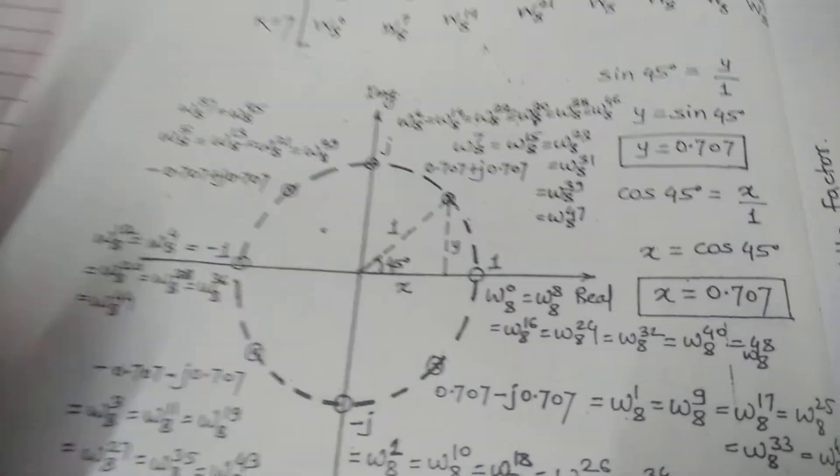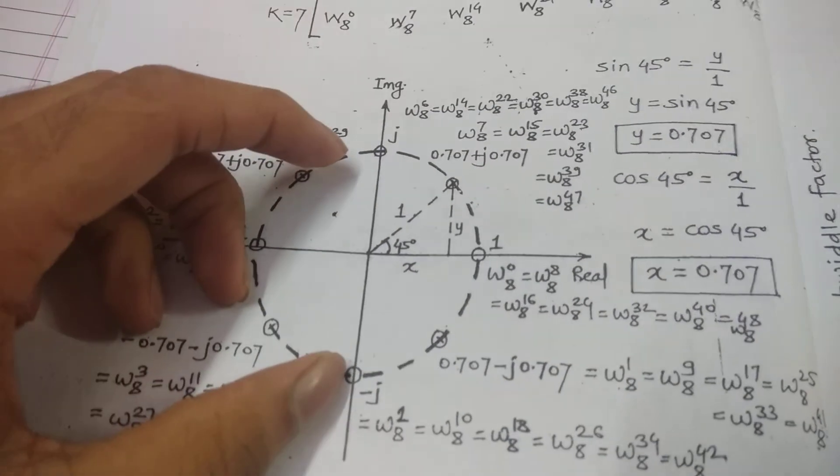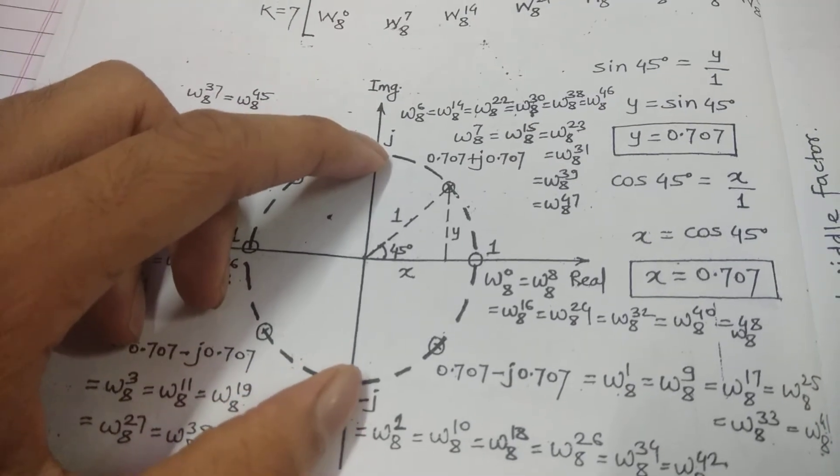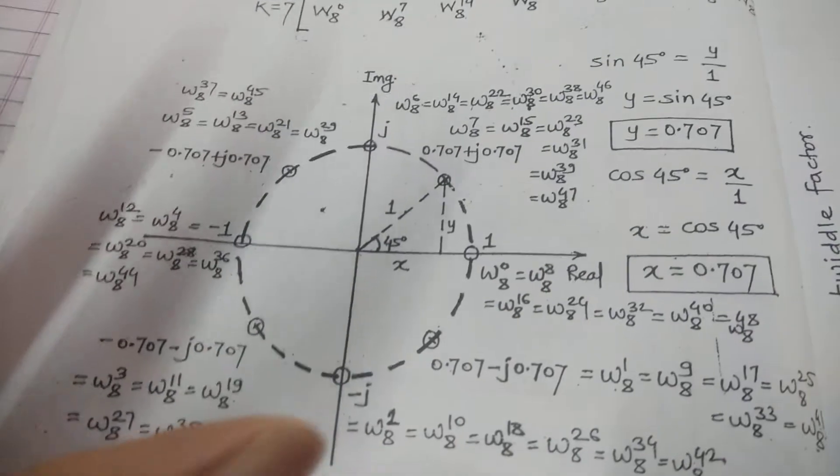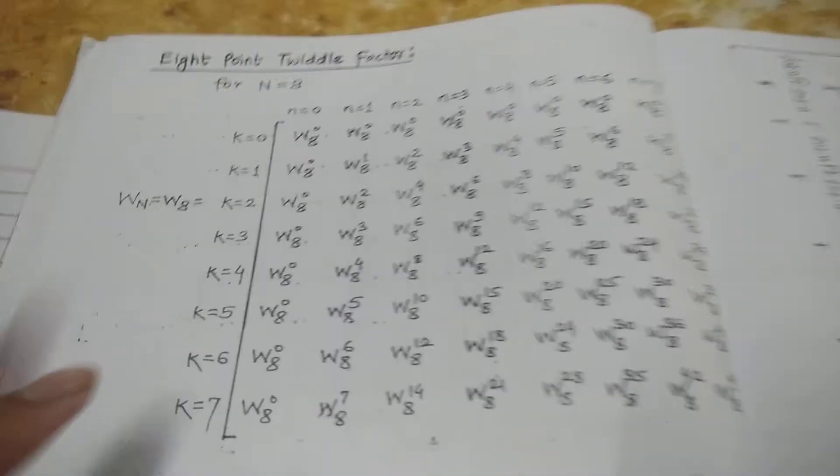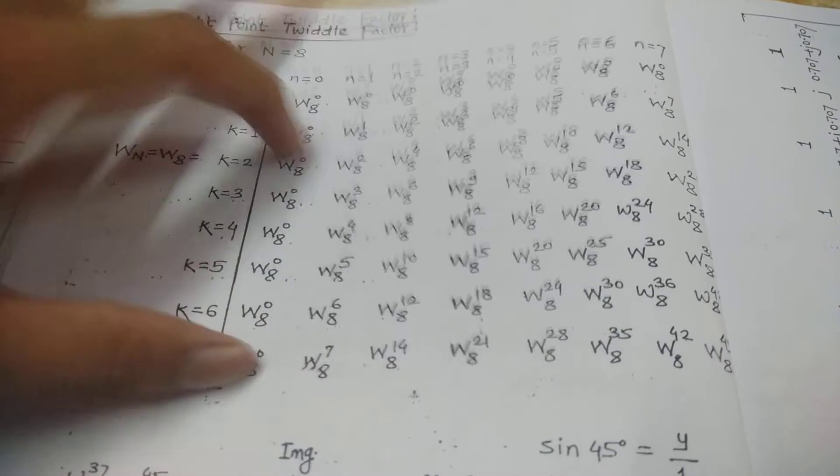Now in these eight points, you will just select these two values as well: imaginary j and minus j. Rest all is simple. Just remember this matrix is quite huge because it has eight rows and eight columns.